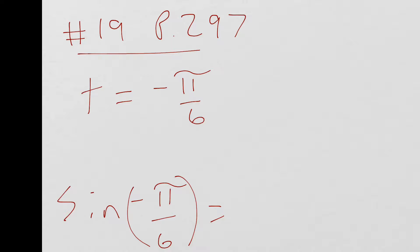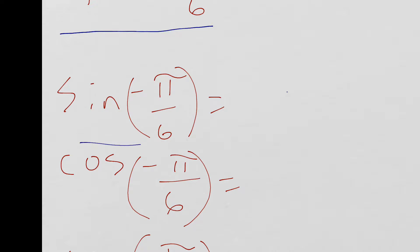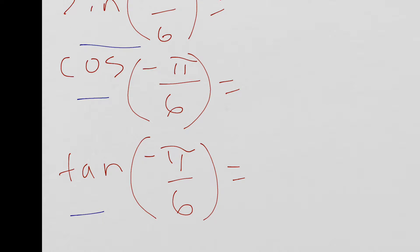Okay, so in this case, number 19, page 297, I got a t value of negative pi over 6. What do I do with the t value of negative pi over 6? I have to use that t value and figure out what the sine is, what the cosine is, and what the tangent is.